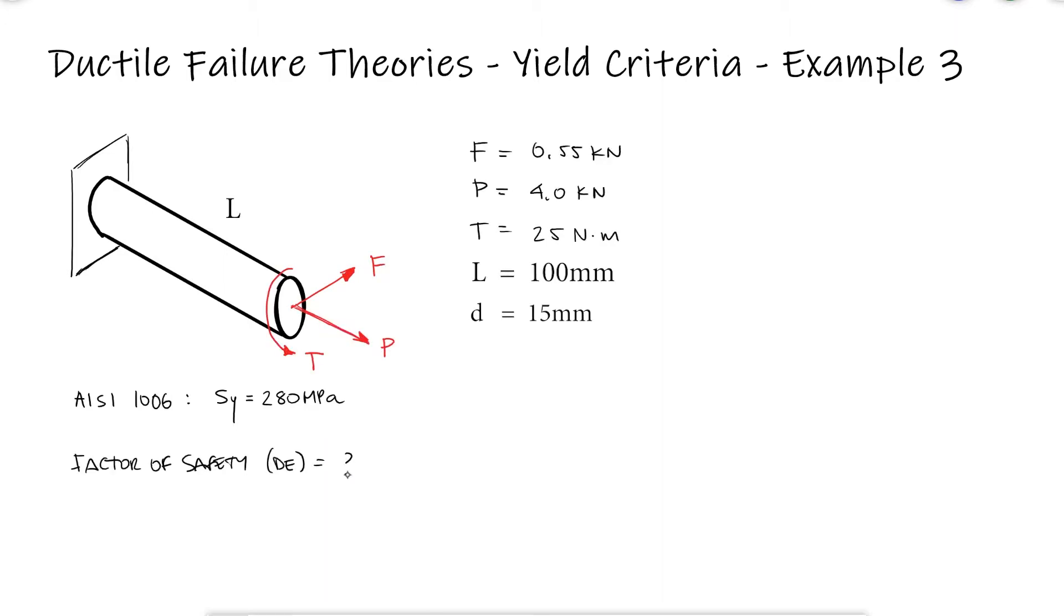This is the third example for the yield criteria video. Make sure you watch the two previous examples and the main video before watching this. Links below.